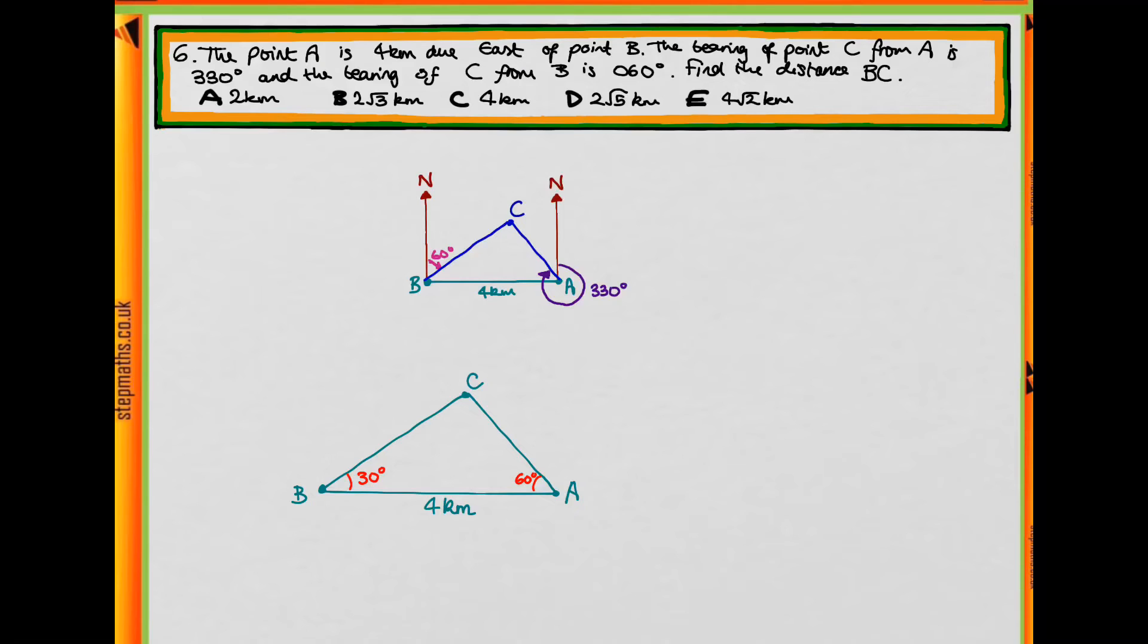Now we know that the angles in a triangle add to 180 degrees. So straight away we can see that C must be 90 degrees. So now can you think of a rule which links angles in a triangle and the sides of the triangle, which we could use to work out BC? Pause the video and see if you can come up with this rule.